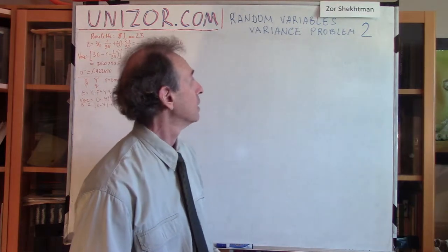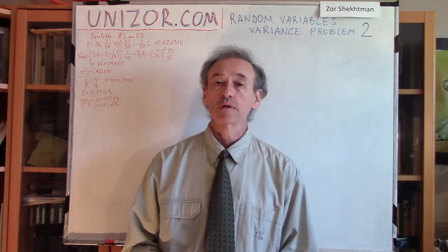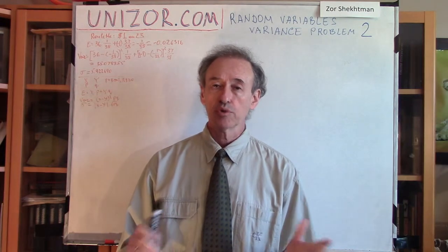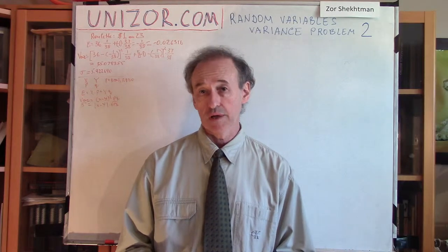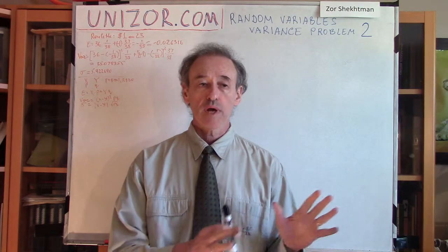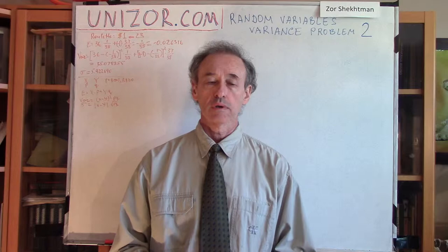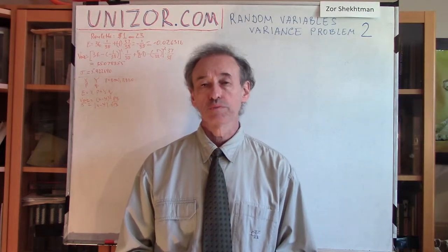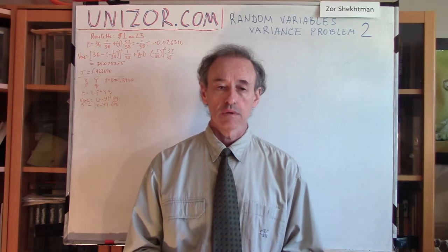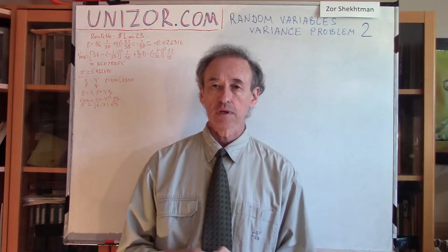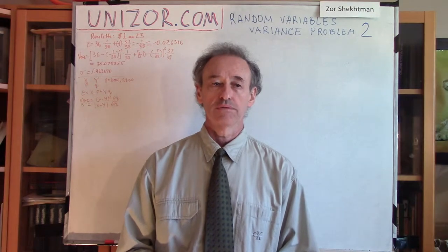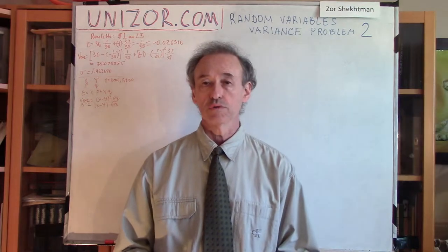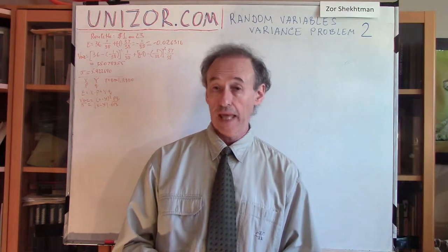This lecture is about variance and the standard deviation of random variables. I would like to present a couple of examples. The theoretical material is supposedly covered in the previous lectures, so I would like to talk about one or two particular examples of how the probabilistic characteristics of a random variable can be calculated and used to evaluate how it behaves.